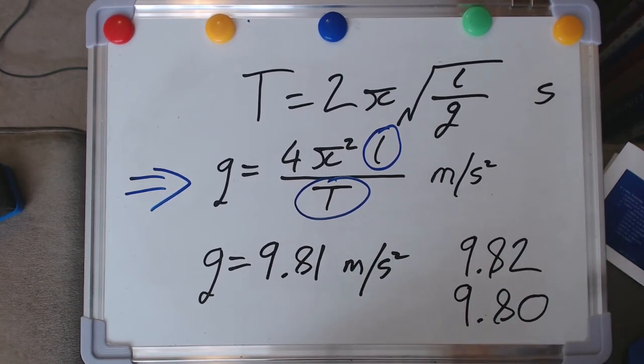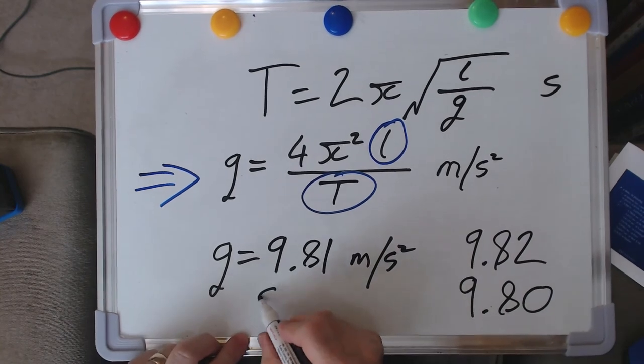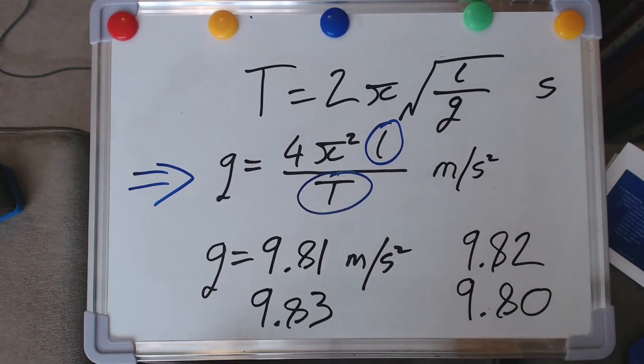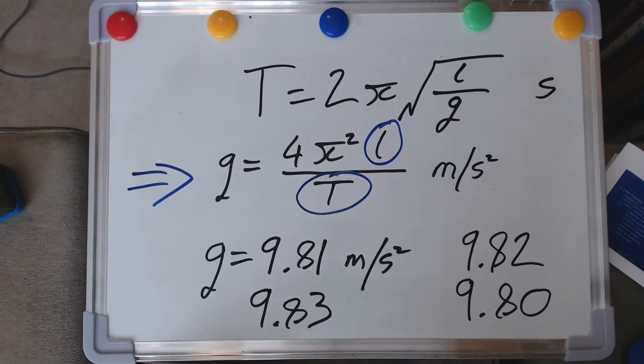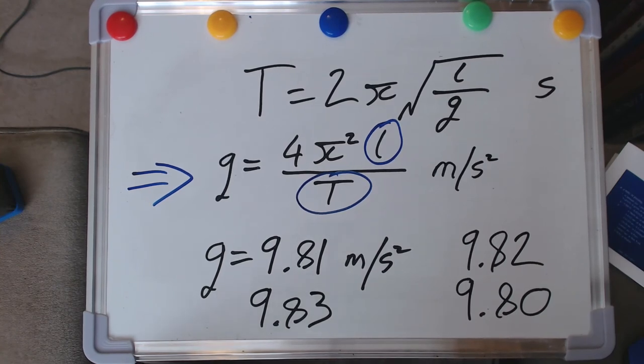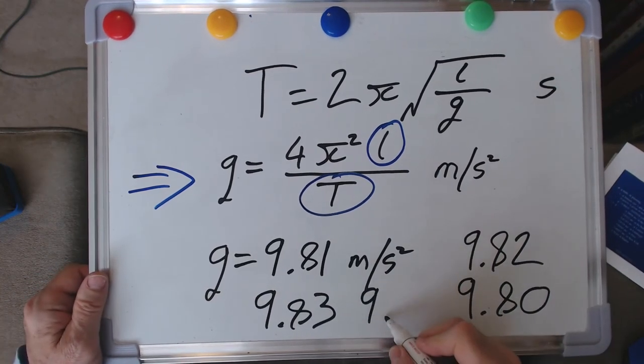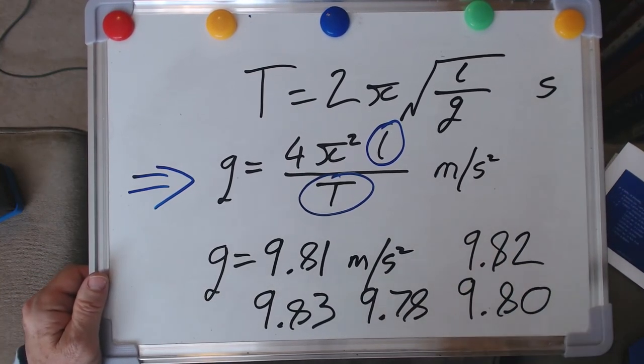If we go up to the North Pole, it's 9.83. And on the equator, it's actually 9.78.